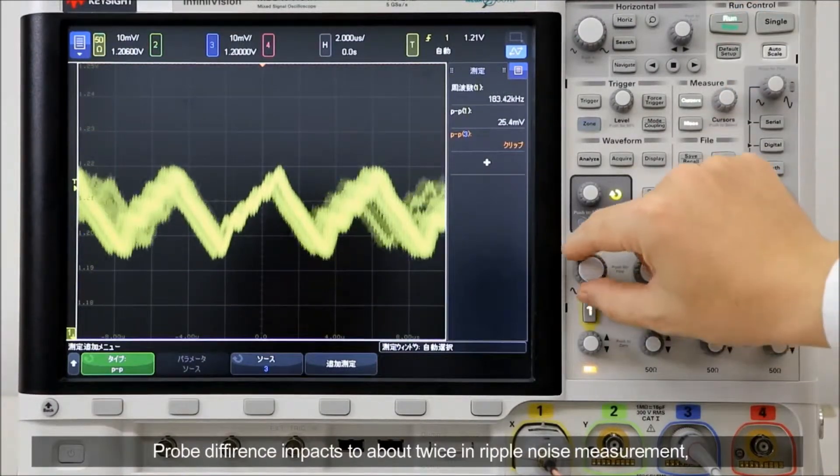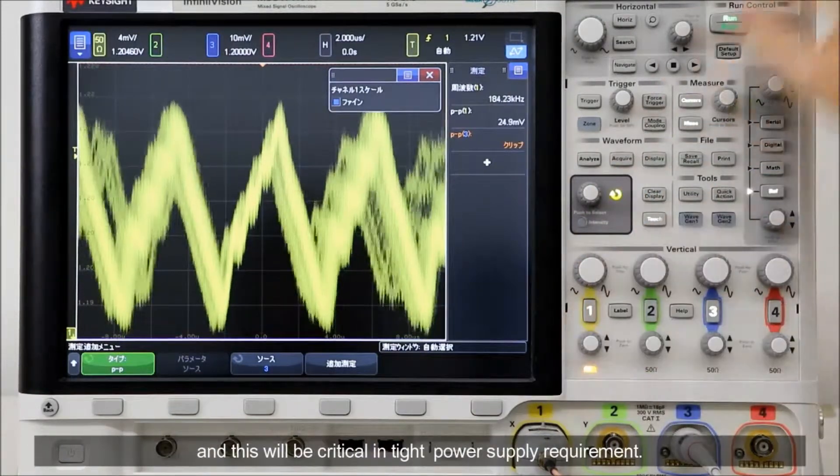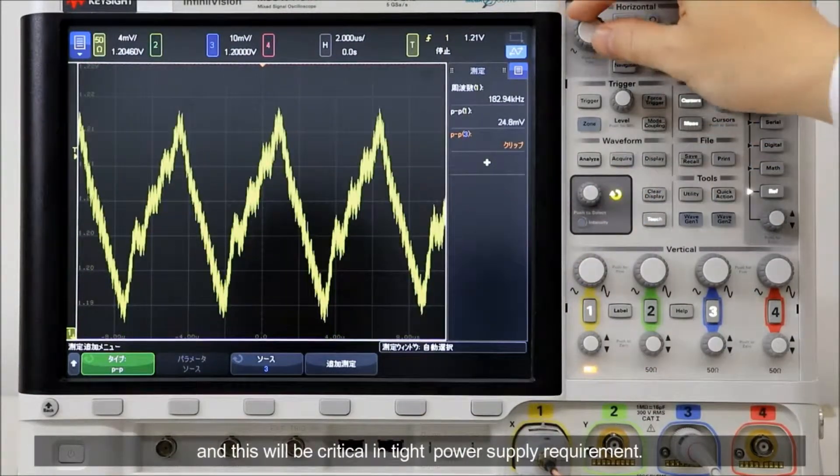Probe difference impacts about twice in ripple noise measurement and this will be critical in tight power supply requirement.